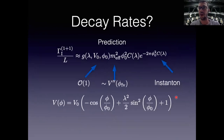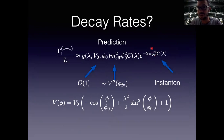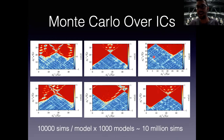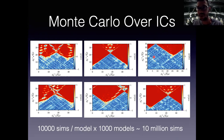Now we need to check the decay rates. We have predictions for how the exponent scales with φ₀, and we need to determine the coefficient C. We run simulations varying only φ₀ and extract the decay rate from each. Instead of one simulation, we Monte Carlo over initial conditions — each Monte Carlo sample is a full live simulation. To get good statistics requires about 10,000 simulations per model, and to check scaling across roughly 1,000 models, that's approximately 10 million simulations total — which is why working in 1D is essential.